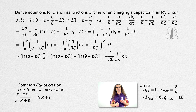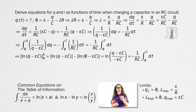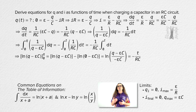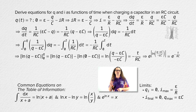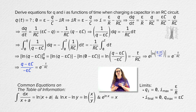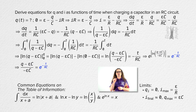We substitute in the limits on the left-hand side. The natural log of x minus the natural log of y equals the natural log of x divided by y. The integral of dt from zero to t is just t, so on the right-hand side we have negative t divided by the quantity resistance times capacitance. We then take e to the power of the whole equation; since e to the natural log of x equals x, the left side becomes the quantity charge minus EMF times capacitance, all divided by negative EMF times capacitance. The right side is e to the power of negative t over resistance times capacitance.